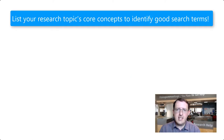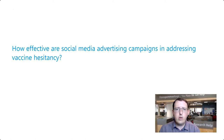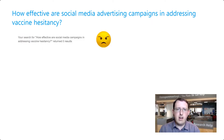An important first step in choosing good keywords is identifying the core concepts in your research topic or question. Let's say we had the following research question: How effective are social media advertising campaigns in addressing vaccine hesitancy? Were we to type this whole question into a database search, we may find that we retrieve few, if any, results because there are many words in the question that authors of relevant studies may not have used.